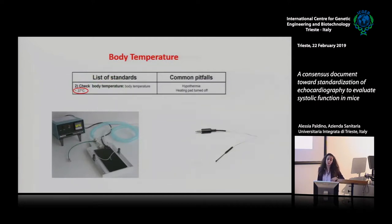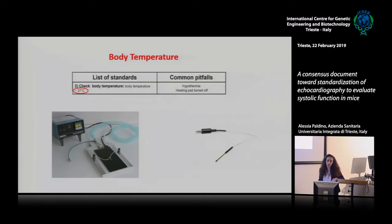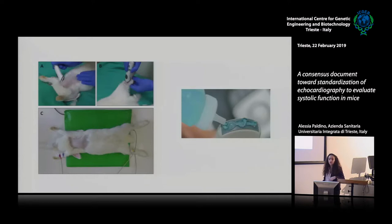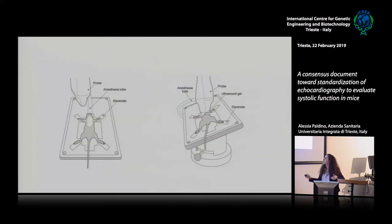Monitoring body temperature is also essential to standardize an echocardiographic study on mice. To monitor the body temperature, we can use a probe and try to maintain the temperature around 37 degrees by positioning the mouse on a heating pad. We should try to avoid hypothermia because it is another reason for reduction of systolic function and contractility of the heart. At this point of the preparation, we should shave the mouse and apply the echocardiography gel. This should be the correct position of the mouse on the heating pad, with the electrodes on the limbs, the anesthetic tube on the face of the mouse, and isoflurane continuously provided.